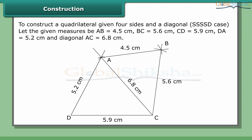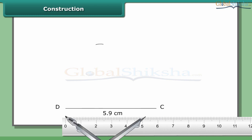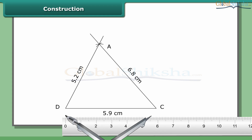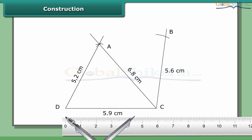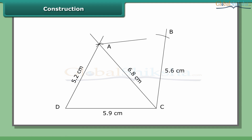The two triangles we can construct to complete the quadrilateral are triangle ADC and triangle ABC. Constructing triangle ADC: draw DC = 5.9 cm. With C as center and radius 6.8 cm, draw an arc. With D as center and radius 5.2 cm, draw another arc to cut the previous arc at A. Join CB and AB. Then ABCD is the required quadrilateral.